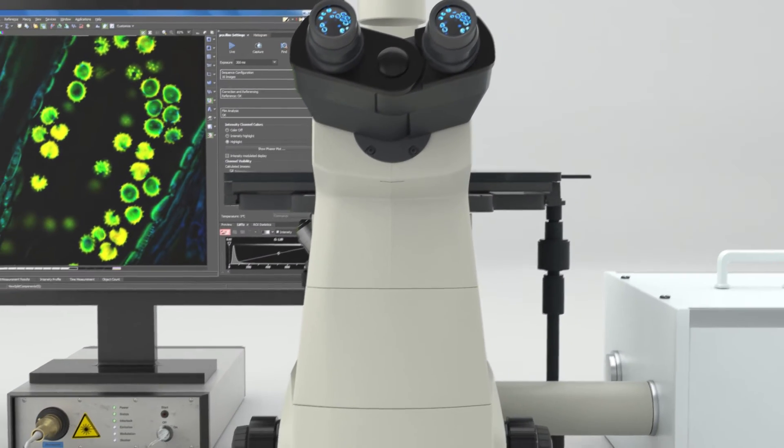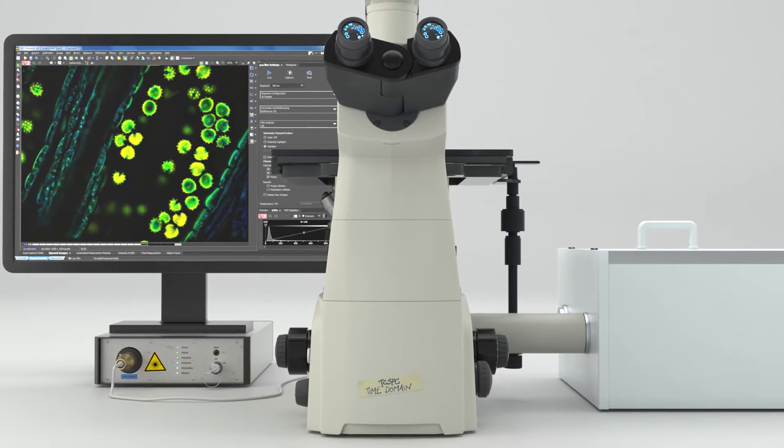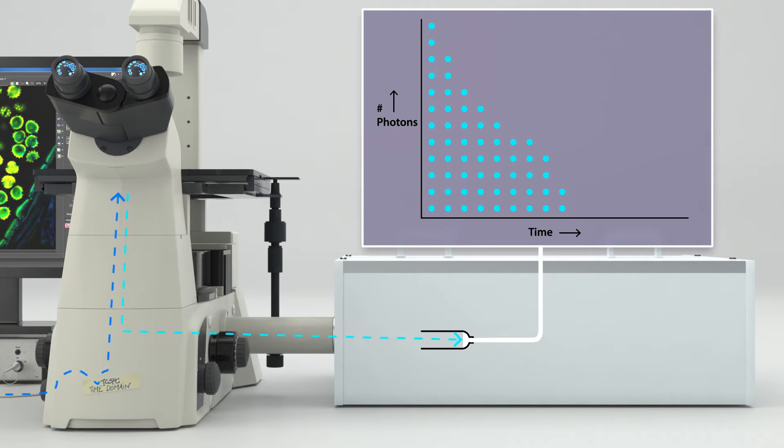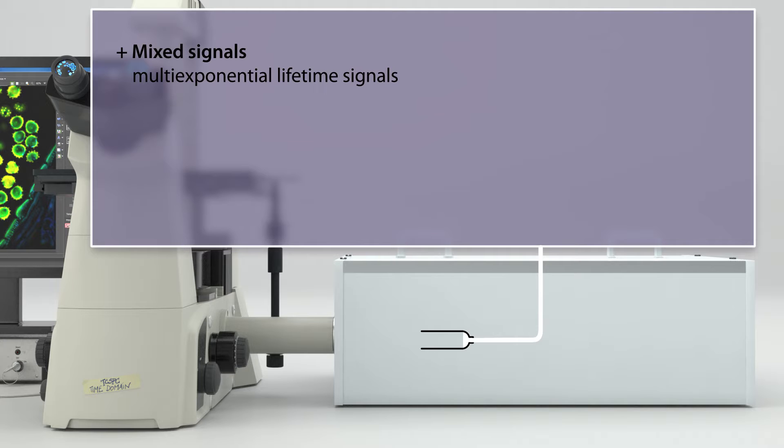Established examples of time domain equipment are point scanning TCSPC systems. These point scanners count the emission photons in time, allowing you to reconstruct a luminescence decay curve. This makes TCSPC suited for mixed, fast and weak emission signals. On the downside, the recording speed of the process is slow due to its point scanning nature.